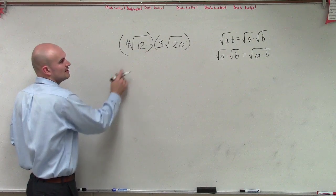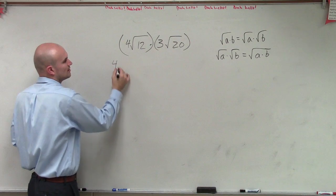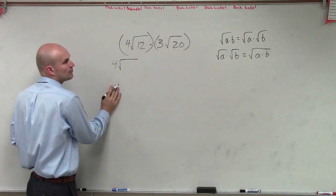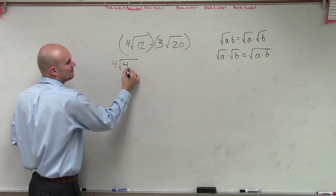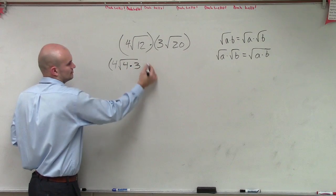So what I can do is say, all right, how can I simplify this? So what I take is 4 times square root. How can I simplify 12? I can simplify it.